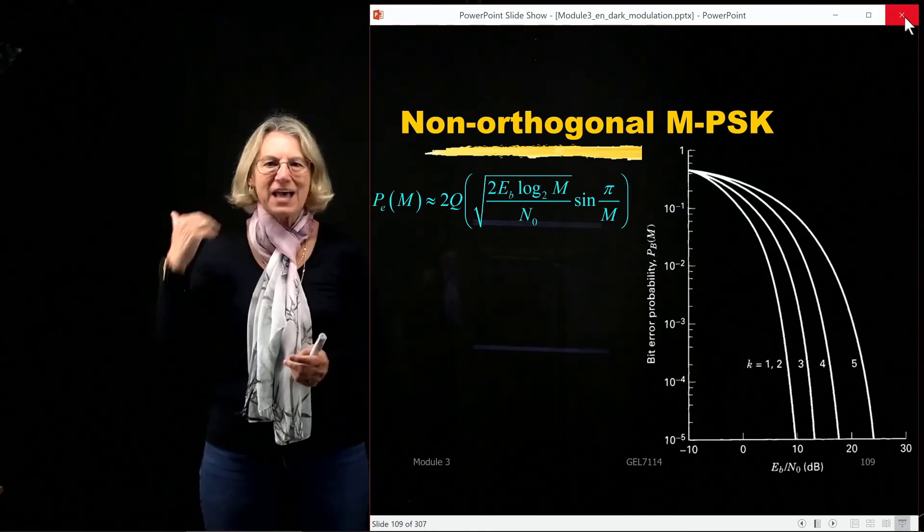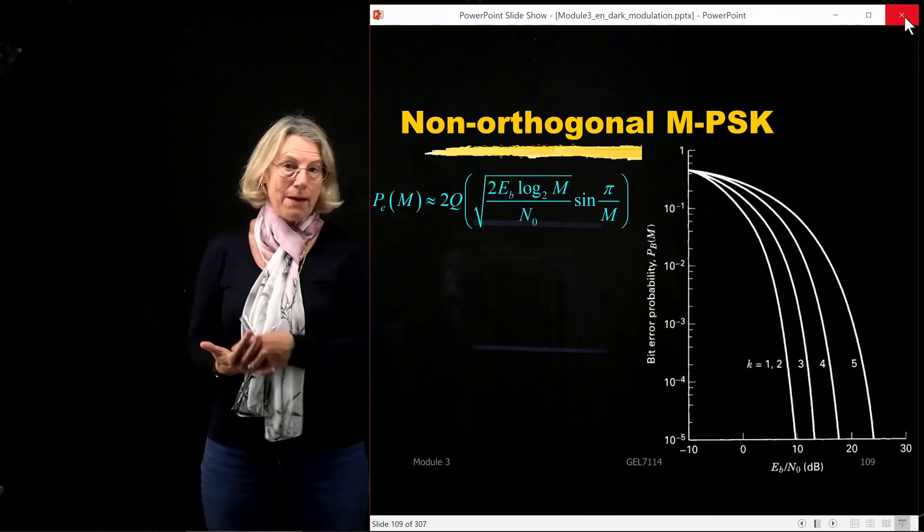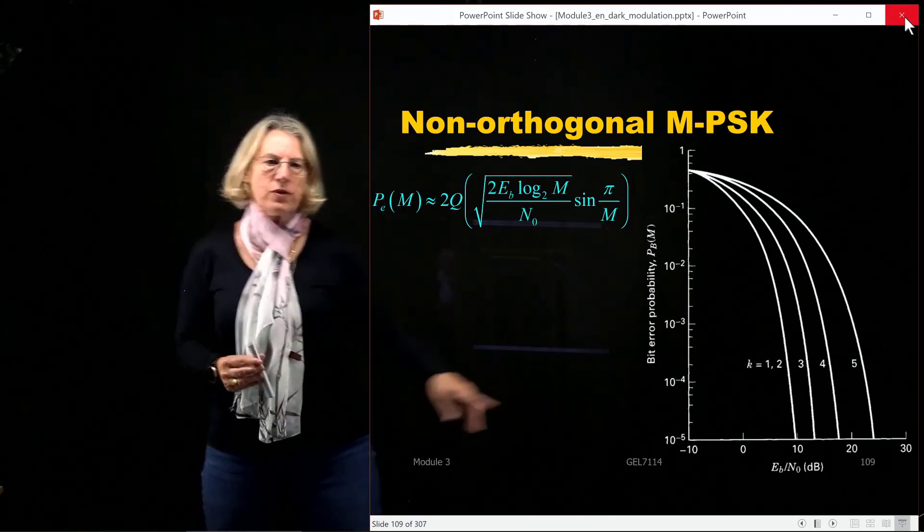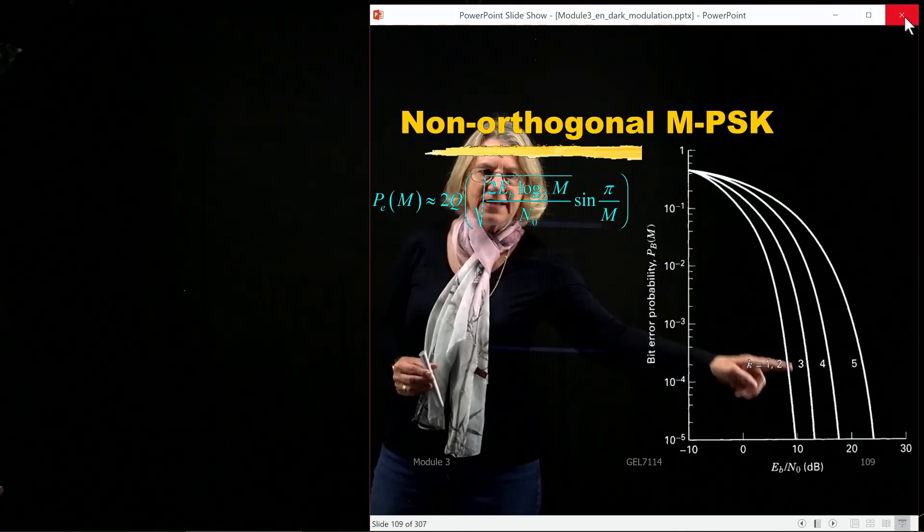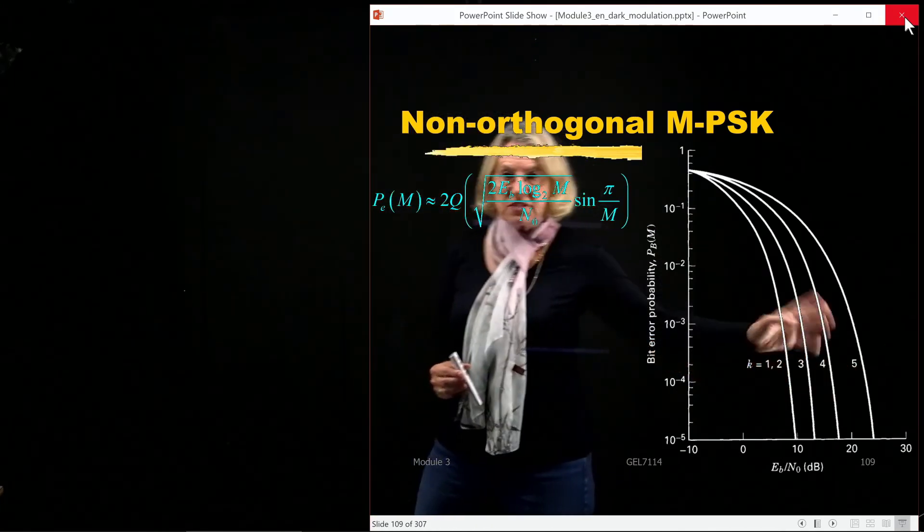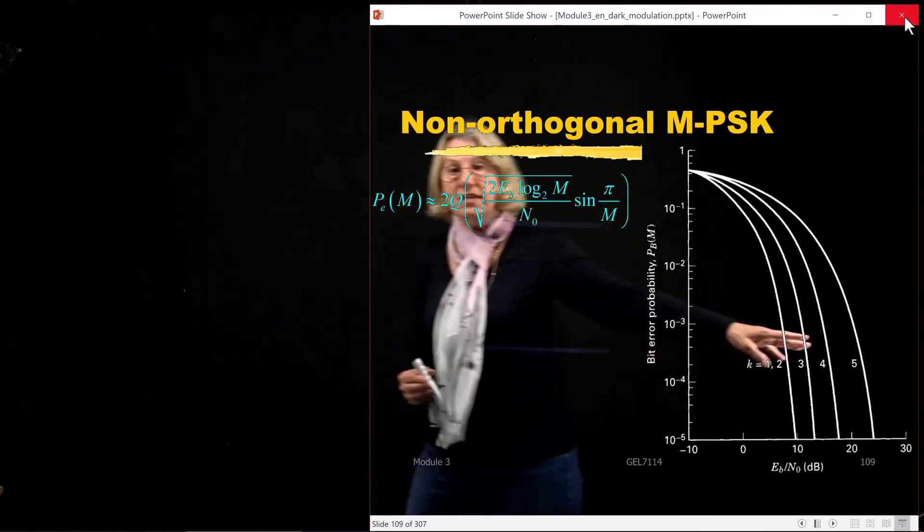This is an example of a not-orthogonal one. And we saw really the opposite behavior, that as we increased, here is the performance of BPSK, and as we increase k, the number of symbols increases and the performance is getting worse.